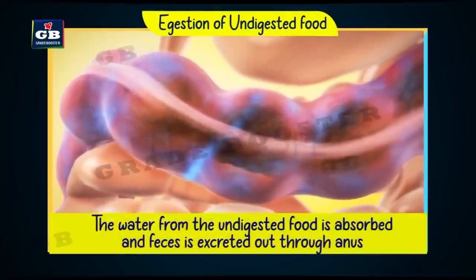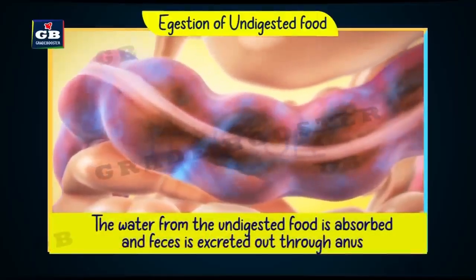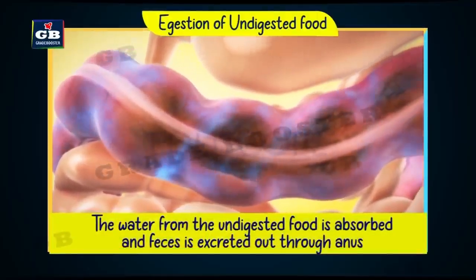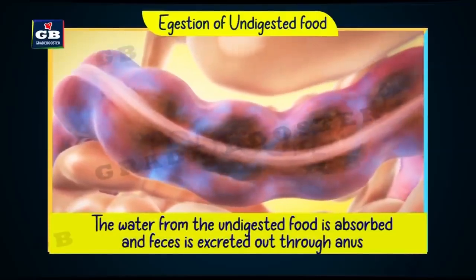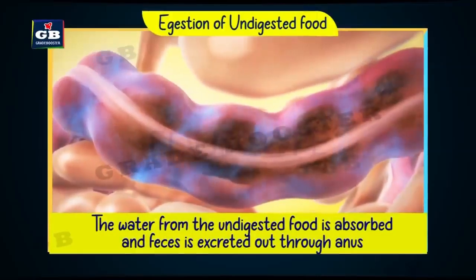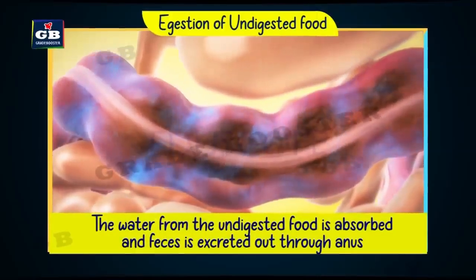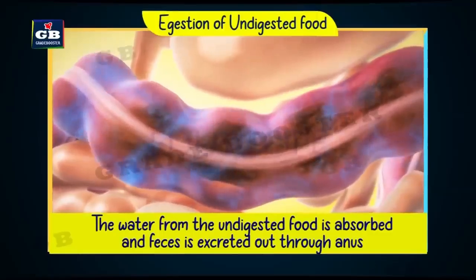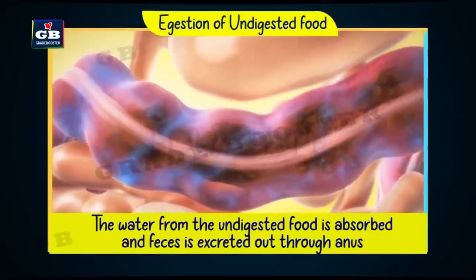Undigested food enters the large intestine, where the water present in it is absorbed into the blood. The remaining undigested waste is excreted out through the anus.